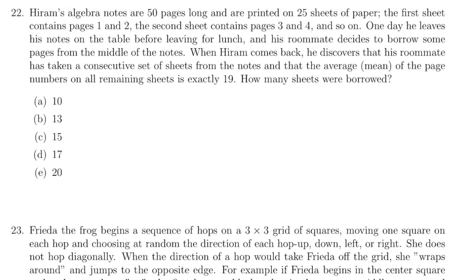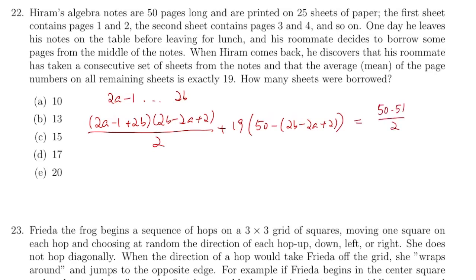Question 22. Let sheets A to B be the pages that are removed, which means pages 2A minus 1 up to 2B are removed. So we can say that the sum of these pages, the page numbers, 2A minus 1 plus 2B times 2B minus 2A plus 2 over 2, plus 19 times the remaining number of pages, which is 50 minus 2B minus 2A plus 2. And that's equal to 50 times 51 over 2.